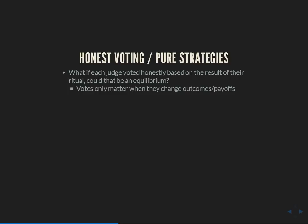The key idea we need to internalize is that votes only matter when they change outcomes. Even though the judges can't talk to each other, they can still ask: when does my vote matter? My vote is only pivotal — it only changes the outcome — when all the other judges voted to execute. That's how unanimity rule works. If two judges vote innocent, the accused will be let go, and changing any single judge's vote wouldn't change that. The only time a single judge's vote matters is when two people vote to execute and one person votes not to.